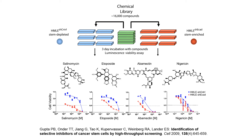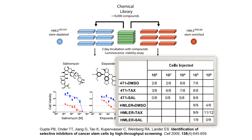Importantly, treatment of mice with salinomycin inhibits mammary tumor growth in vivo and induces increased epithelial differentiation of tumor cells. In addition, global gene expression analyses show that salinomycin treatment results in the loss of expression of the breast mammary cancer stem cell gene signature, demonstrating the ability to identify agents with specific toxicity for epithelial mammary cancer stem cells.